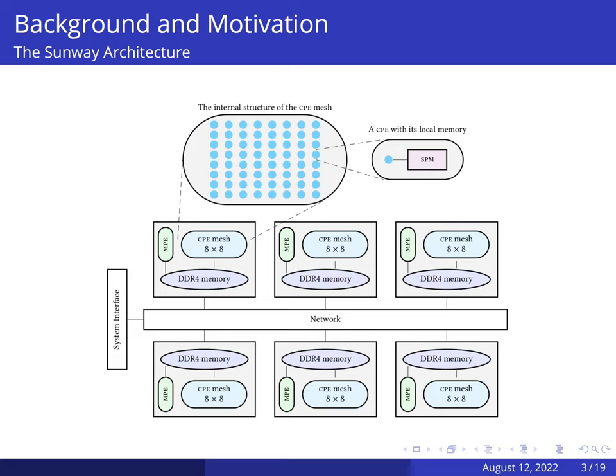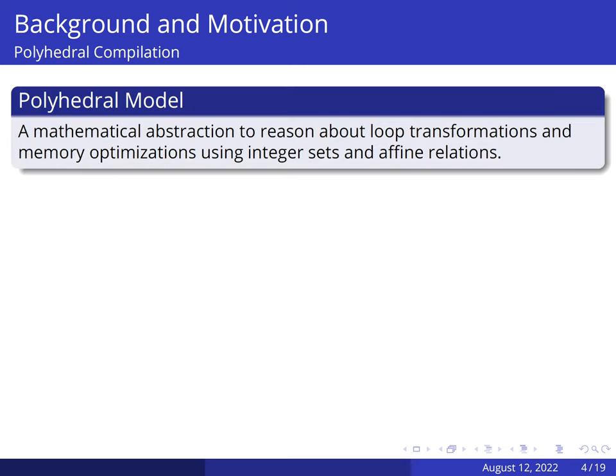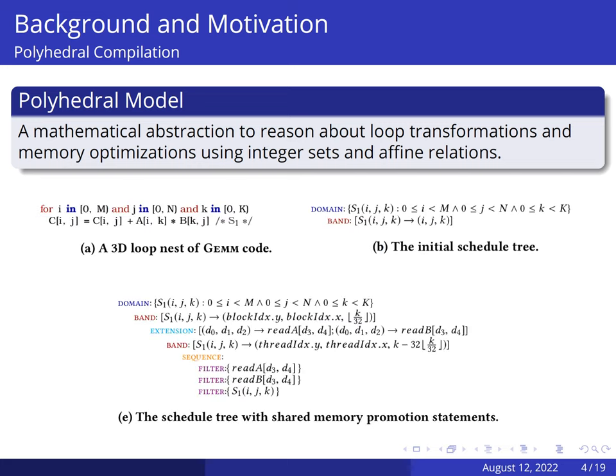The second part of background information is polyhedral compilation. We leverage the polyhedral model to implement our approach. The polyhedral model is a mathematical abstraction to reason about loop transformations and memory optimizations using integer sets and affine relations. It can take the three-dimensional loop nest of matrix multiplication code as input, represent it as a schedule tree, and perform loop transformations and memory promotions as shown in figure E.